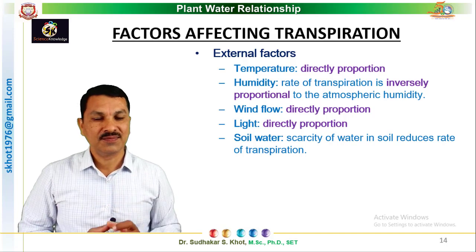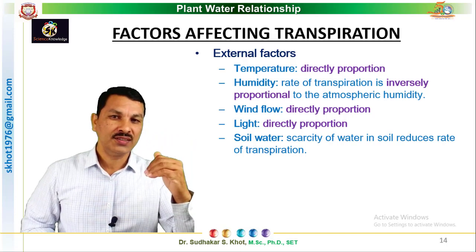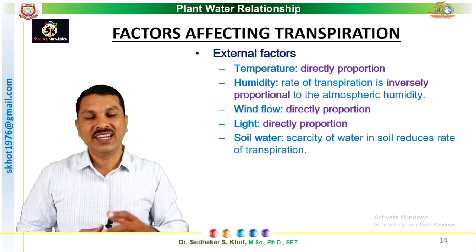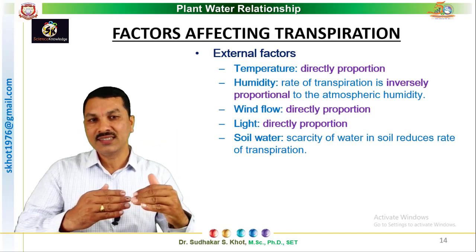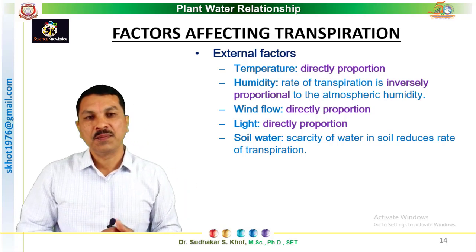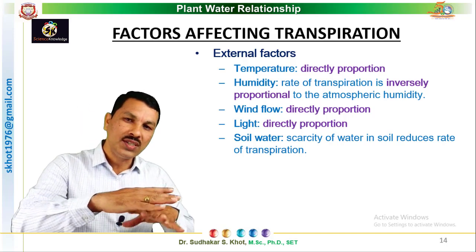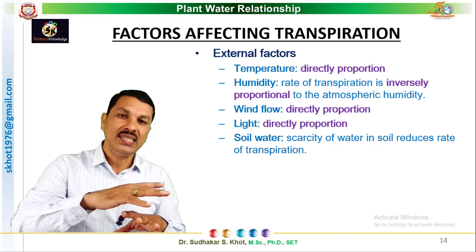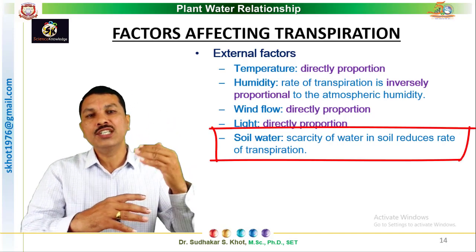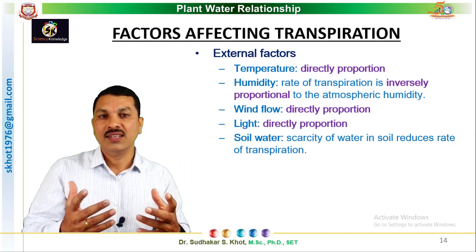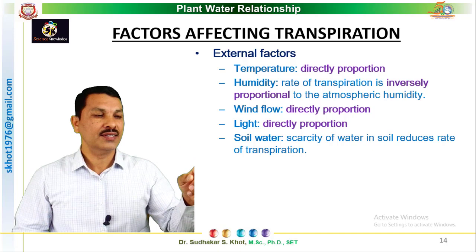With high light intensity, the rate of transpiration is more; with darkness, the rate of transpiration is less. The final external factor is soil water. If there is no water or less water in the soil, plants tend to conserve their water, and therefore in scarcity of soil water the rate of transpiration is reduced. To summarize external factors: temperature, humidity, wind flow, light, and soil water.